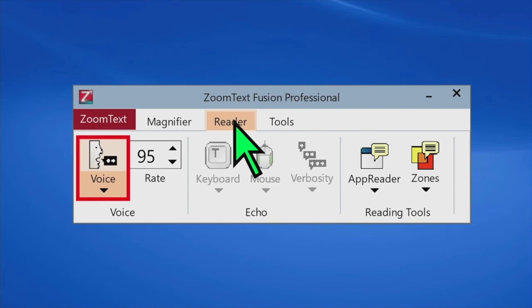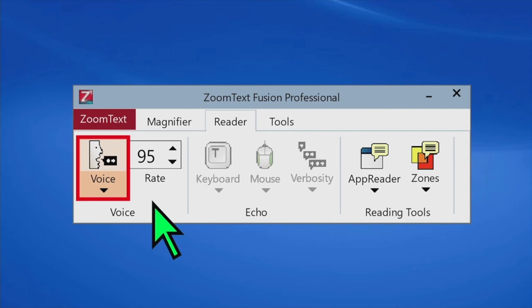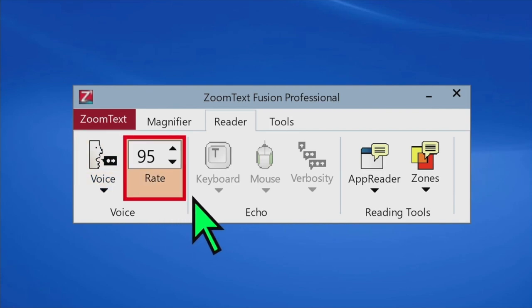On the reader tab of the ZoomText toolbar, you can enable and disable speech, as well as adjust the speech rate. Menu, disable. To move through items, press up or down arrow. Voice split button. Rate edit spin box. 95, 99 percent, 100 percent.